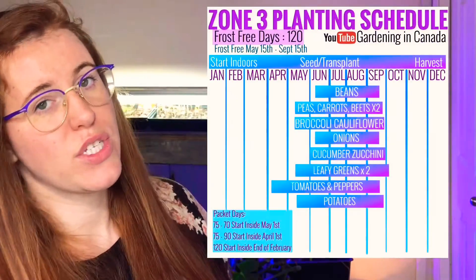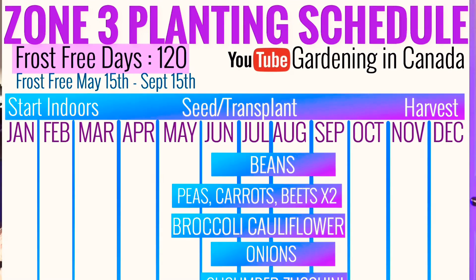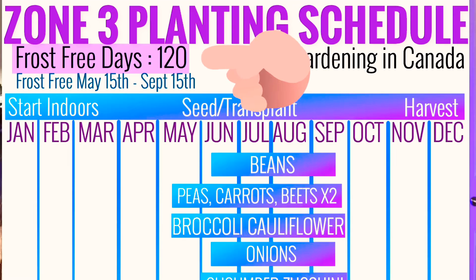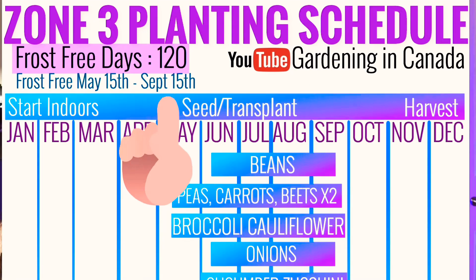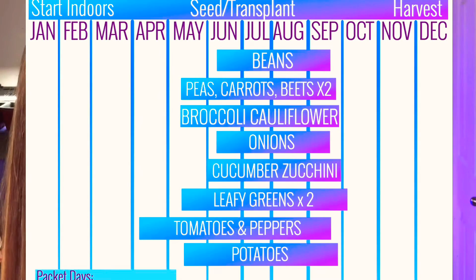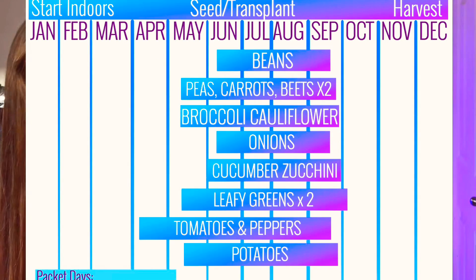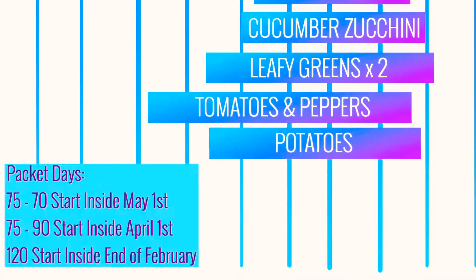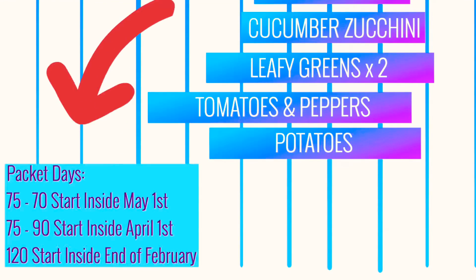Now let's talk about the zones themselves. I'm zone three, so let's start there. This is what your growing schedule is going to look like. On this schedule you're going to see your total number of frost-free days, when your frost is expected to lift, when it's expected to come back, various different types of crops, when to start them indoors, transplant, and then harvest. It's also going to show you in the bottom corner how to read the seed packets and my recommendation on when to start them indoors versus outside.